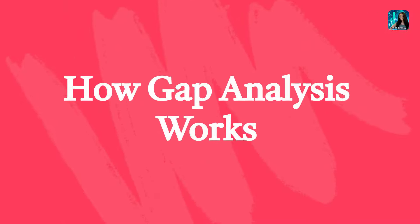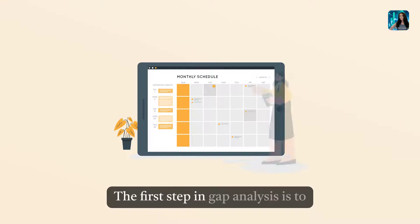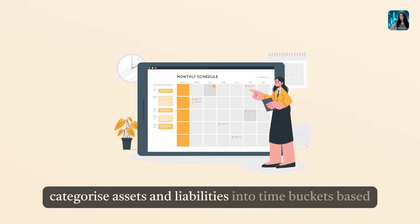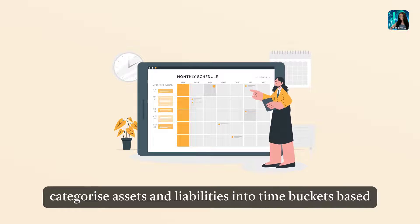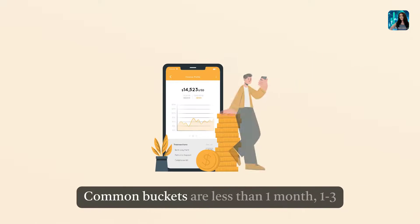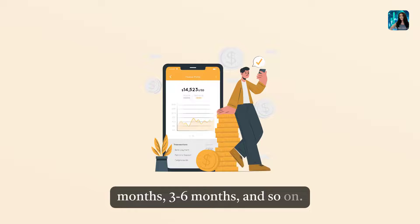How Gap Analysis Works: Identifying Time Buckets. The first step in gap analysis is to categorize assets and liabilities into time buckets based on their maturity or repricing periods. Common buckets are less than one month, one to three months, three to six months, and so on.